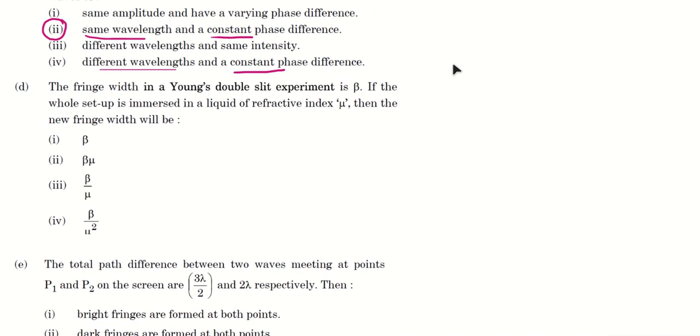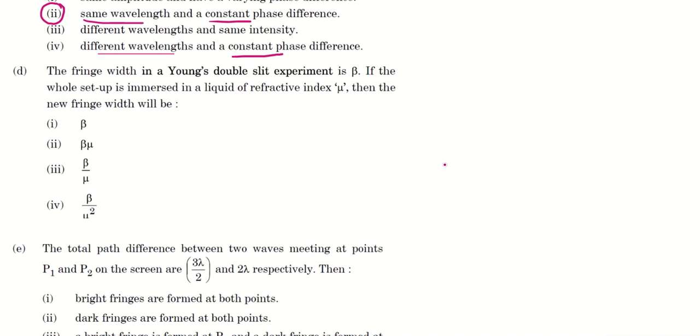Next question. The fringe width in a double slit experiment is beta. If the whole setup is immersed in a liquid of refractive index mu, then the new fringe width will be.